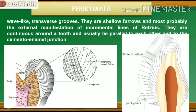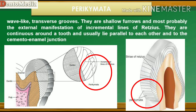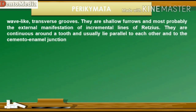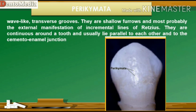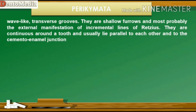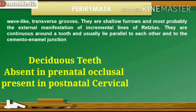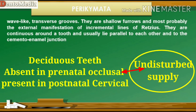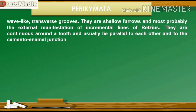Perikymata are wave-like transverse grooves — shallow furrows and most probably the external manifestation of incremental lines of Retzius. They are continuous around a tooth and usually lie parallel to each other and to the cemento-enamel junction. Usually there are 30 perikymata per millimeter near the cemento-enamel junction and 10 perikymata near the occlusal or incisal region of a tooth. Perikymata are absent in the prenatal occlusal parts of the deciduous teeth but are present in the postnatal cervical parts. In the prenatal period, there is undisturbed supply of nutrients even at the cost of the mother's health, hence they are absent.